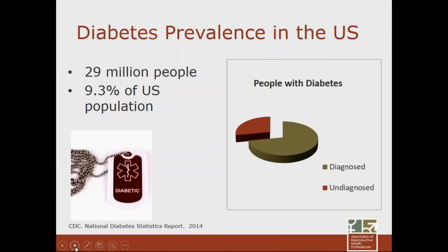Diabetes is growing in prevalence in the United States, currently affecting about 29 million people or just over 9% of the U.S. population. Of those, about 21 million have been diagnosed and there's another large group of over 8 million who have diabetes but have not been diagnosed. Currently about a quarter of people with diabetes are undiagnosed, and that's something that we as clinicians bear some responsibility for.